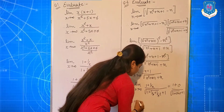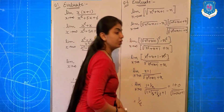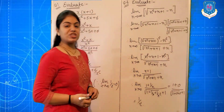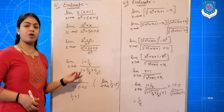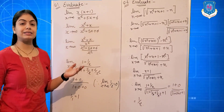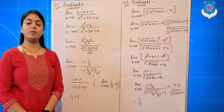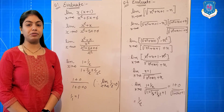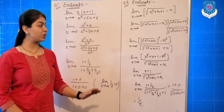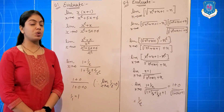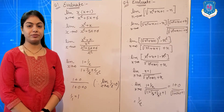So your answer is 1/2. Both questions use the same standard form: limit n tends to infinite, 1 upon n is equal to 0. Both questions are easy and important for your examination.